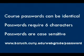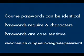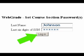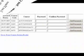To set your password, simply direct your web browser to www.baruch.cuny.edu/webgrade/password. Once there, enter your last name and your password, which is the last six digits of your social security number. Select Login, and you'll see a page listing all of your courses.